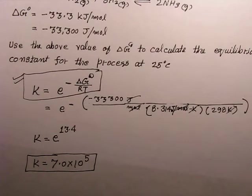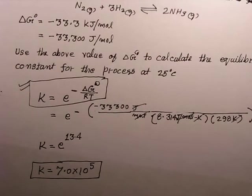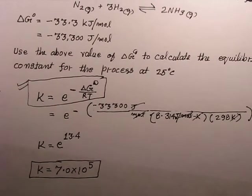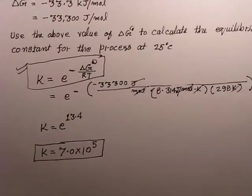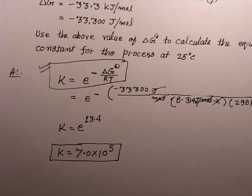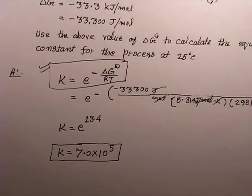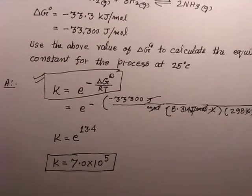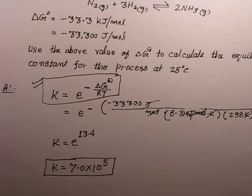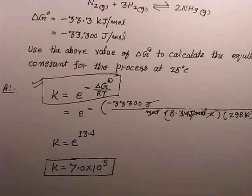These were the three examples related to non-standard condition calculations for Gibbs free energy, Q, and K. These are three important equations you must memorize and know how to use in calculations.